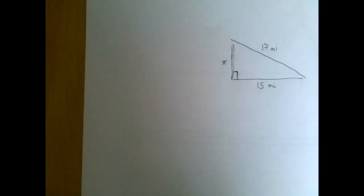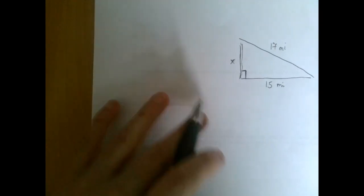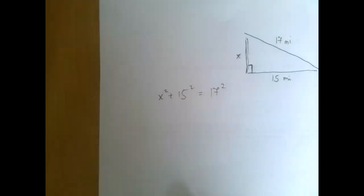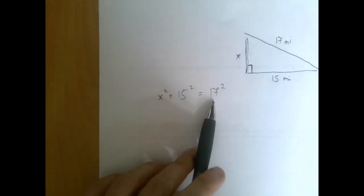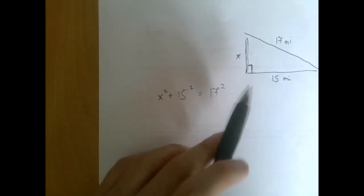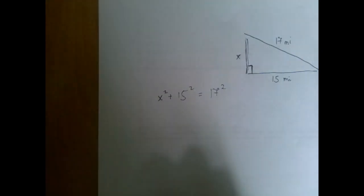So the Pythagorean theorem will allow us to solve for one side given the other two. Let's just state the Pythagorean theorem on this triangle: x squared plus 15 squared equals 17 squared. In the Pythagorean theorem, the number alone has to be the hypotenuse, that is the longest side, the one opposite to the right angle. And now we solve for x.